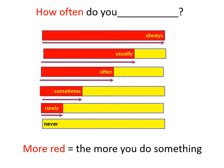Cột nào nhiều màu đỏ hơn nghĩa là các con làm việc đó càng nhiều hơn. Ví dụ: 'always' màu đỏ chiếm nhiều nhất — nghĩa là luôn luôn. 'Usually' màu đỏ ít hơn nhưng vẫn chiếm đa số — nghĩa là thường thường. 'Often' màu đỏ ít hơn usually nhưng vẫn chiếm hơn phần nửa — nghĩa là thường. 'Sometimes' màu đỏ chiếm gần phần nửa — nghĩa là thỉnh thoảng. 'Rarely' màu đỏ chiếm ít nhất — nghĩa là hiếm khi. 'Never' không có màu đỏ — nghĩa là không bao giờ.